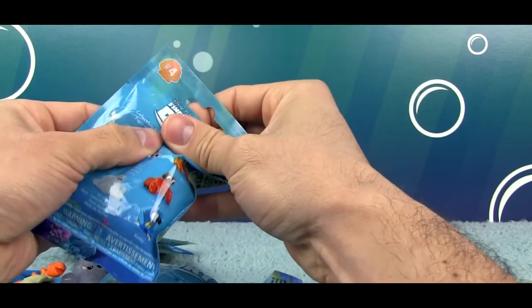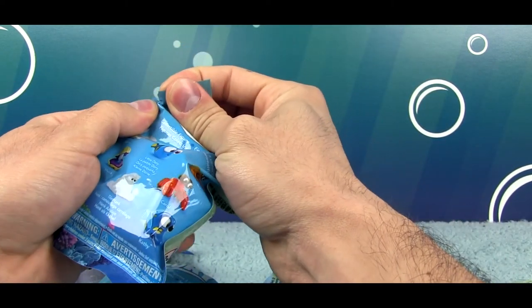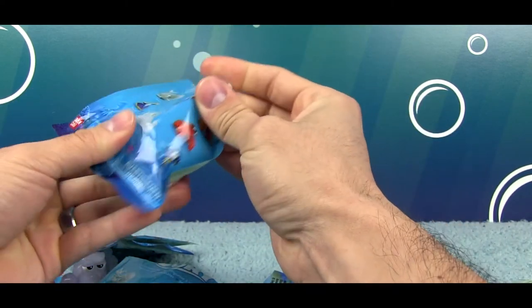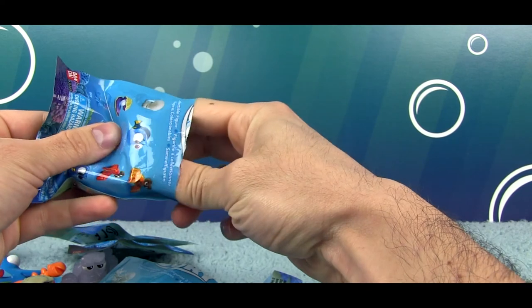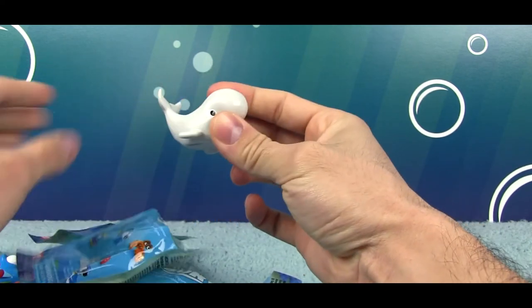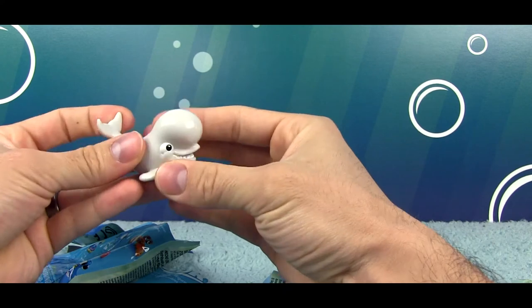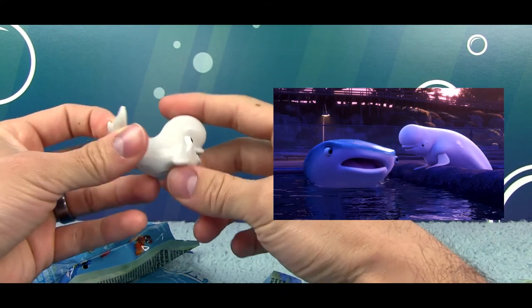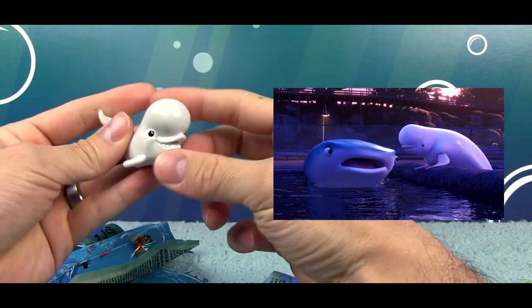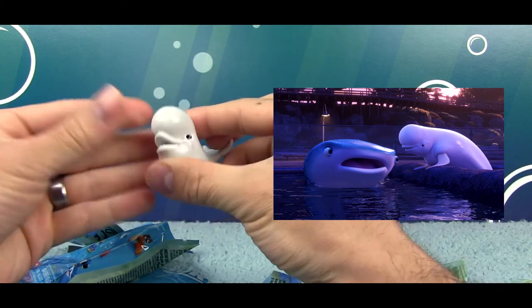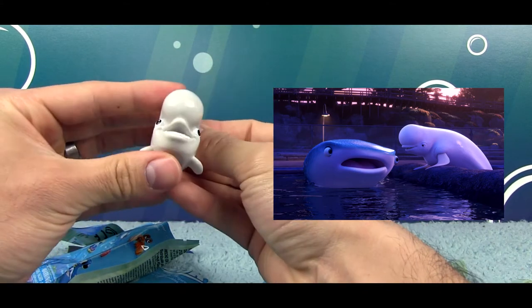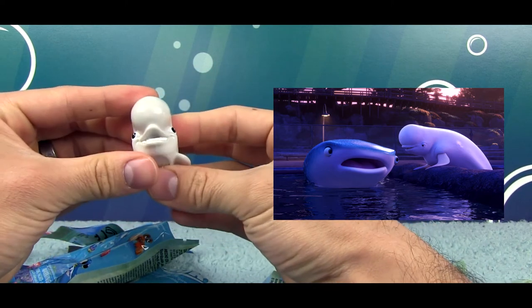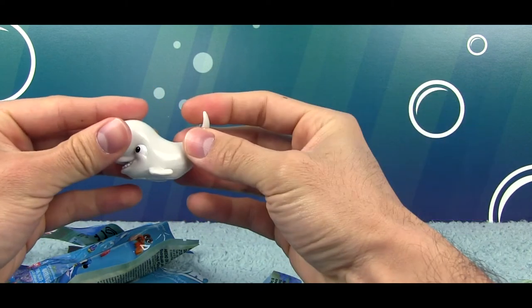So our last one here by process of elimination, we should actually know who this is. And you'd be correct in thinking it is Bailey. Bailey here is another one that, man, he's one of the main characters of the film and it's taken all the way up to series four to finally get a Bailey. So that is so exciting. I'm glad that they didn't leave him out. What a great design, what a great figure. He's going to look so good along with all the other figures.